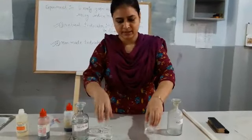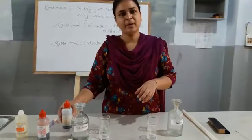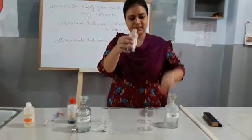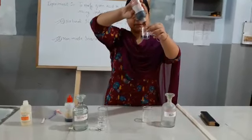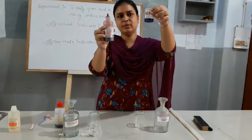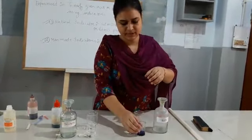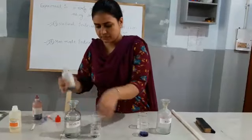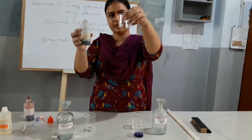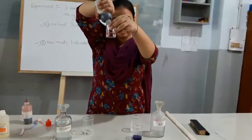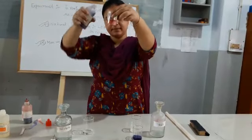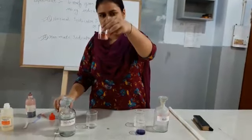Now, I am repeating the same experiment. This is acid, this is base. I am using red and blue litmus solution. I am putting the red solution into our base. As you know, when red litmus solution is used in a base, it changes to blue color. Similarly, when blue litmus solution is put in an acid, it changes to red color. Let us verify it. See, the color changes to red. This verifies that this beaker contains acid.